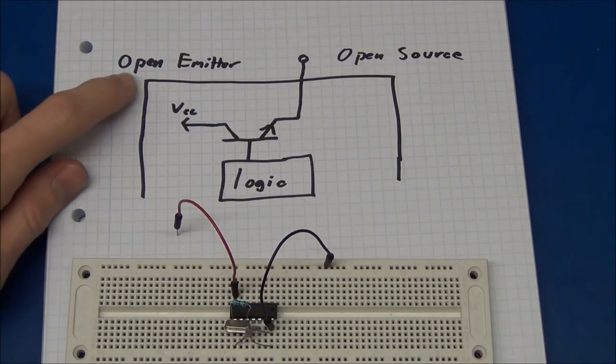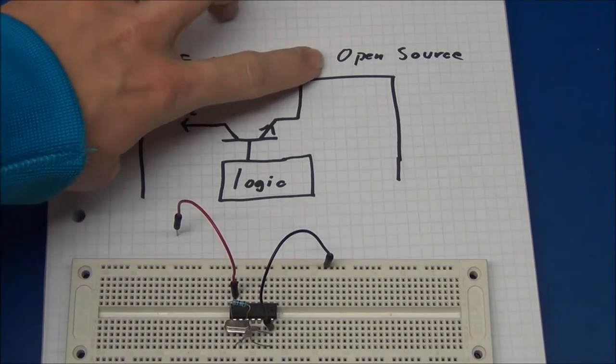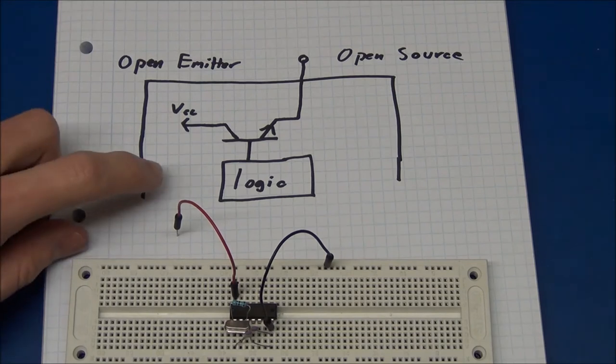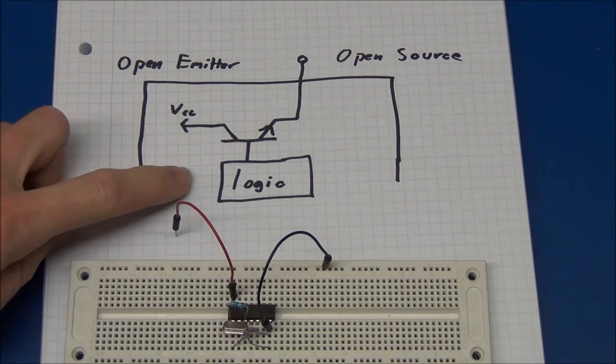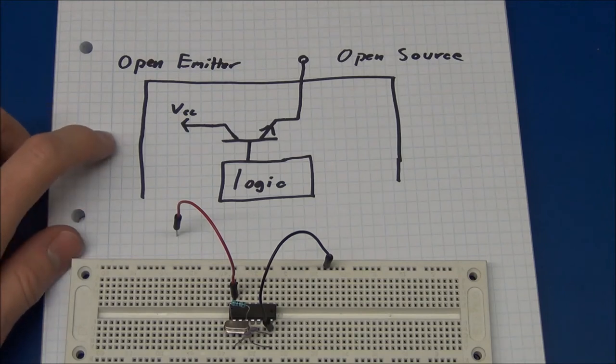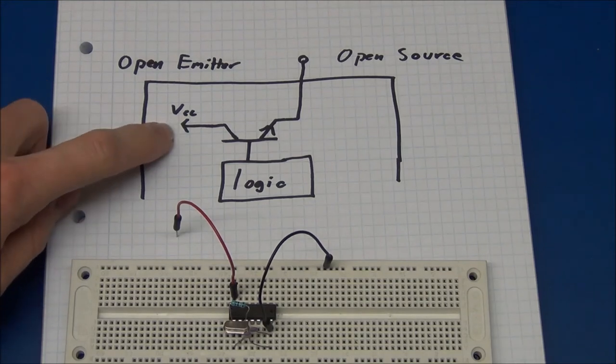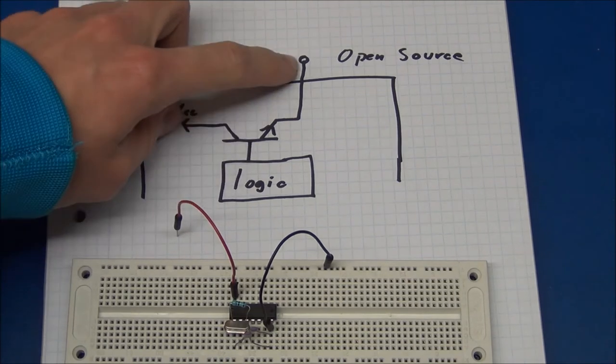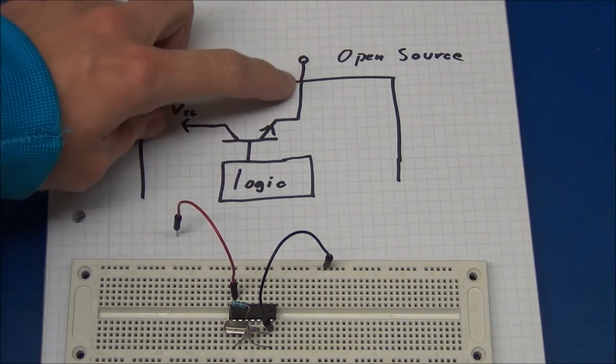There's also what is called an open emitter or open source output. But I don't think that's used in common logic chips. But it's just the opposite of the open collector output. So you have a VCC and you can source current, but you can never sink current.